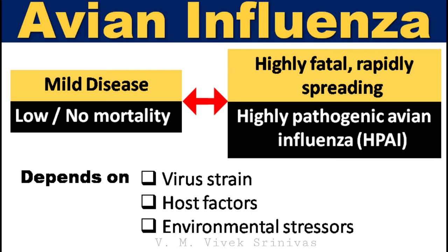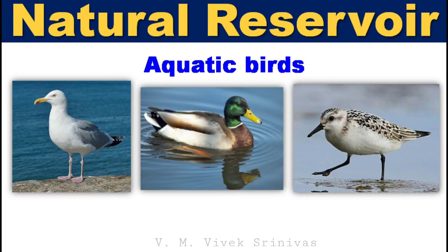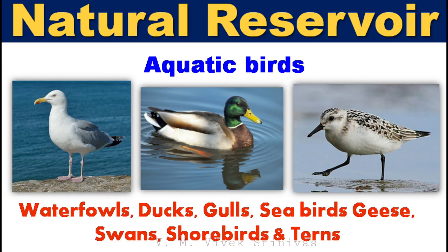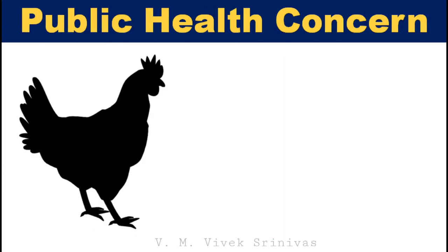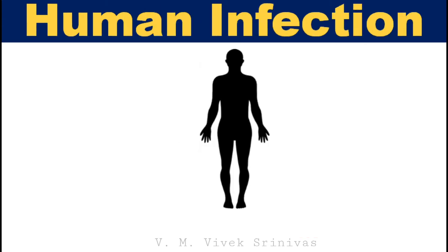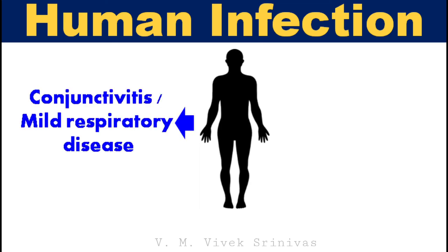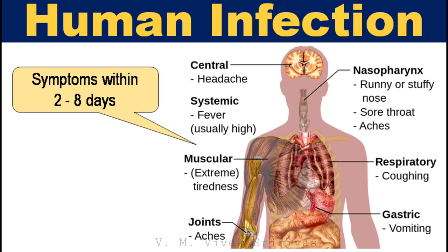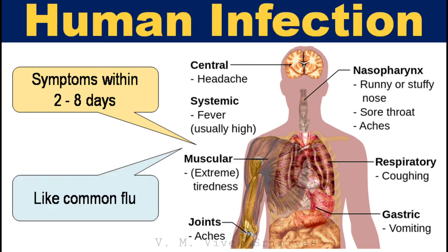Aquatic wild birds act as natural reservoirs for this virus. Waterfowls such as ducks, gulls, seabirds, geese, swans, shorebirds, and terns can carry the virus without any signs of illness. This virus can be transmitted from infected poultry to humans and causes infection in poultry handlers, giving it a public health concern with zoonotic potential. Depending upon the strain and other factors, in humans this virus can cause mild symptoms like conjunctivitis or mild respiratory disease, or it can cause severe illness. Symptoms begin within 2–8 days and resemble common flu: cough, fever, sore throat, muscle aches, headache, and shortness of breath.